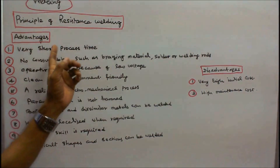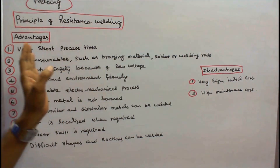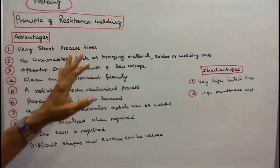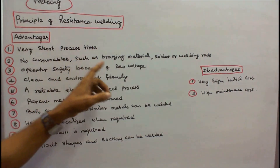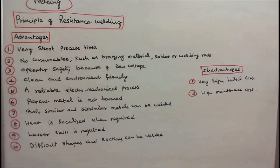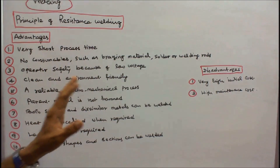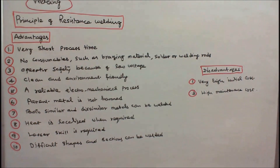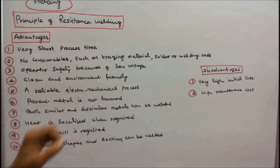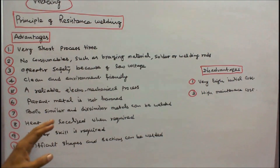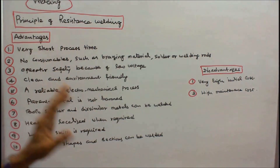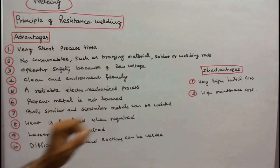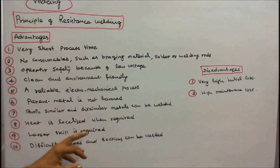Advantages of resistance welding: 1. Very short process time. 2. No consumables such as brazing materials, solder, or welding rods. 3. Operator safety because of low voltage. 4. Clean and environment friendly. 5. Reliable electromechanical process. 6. Parent metal is not harmed. 7. Both similar and dissimilar metals can be welded. 8. Heat is localized when required.